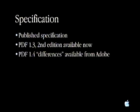PDF is actually a specification published by Adobe. You can download it from the web or buy it as a book. The current version is the 1.3 second edition — it's a very nice specification, unlike some specifications in the world. Adobe has also recently published the 1.4 differences, a document describing how PDF 1.4 differs from PDF 1.3. They haven't published the full 1.4 spec yet, but they do have information about what's coming.